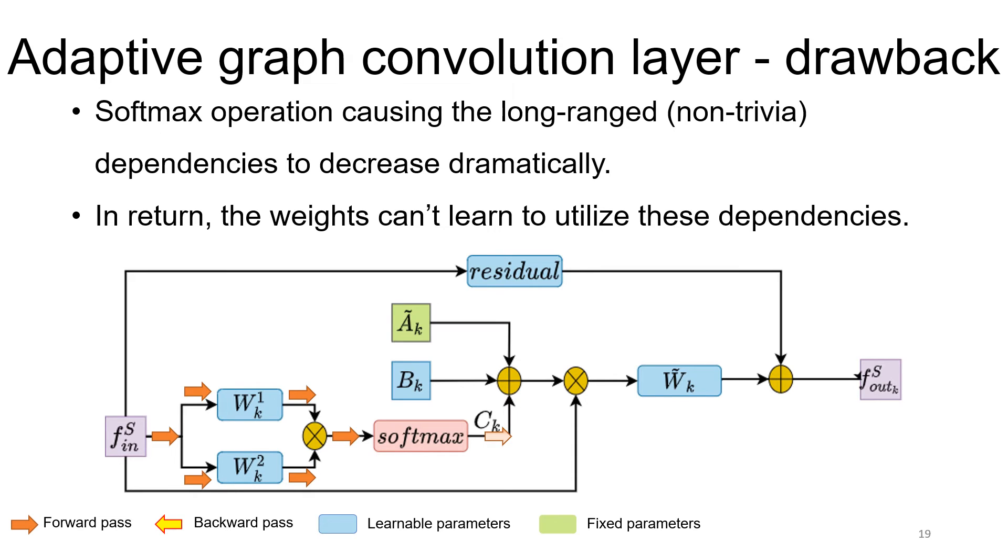Therefore, the model isn't able to learn these dependencies, since it never permutes them forward, and in return, no gradients are pushing the model in this direction.